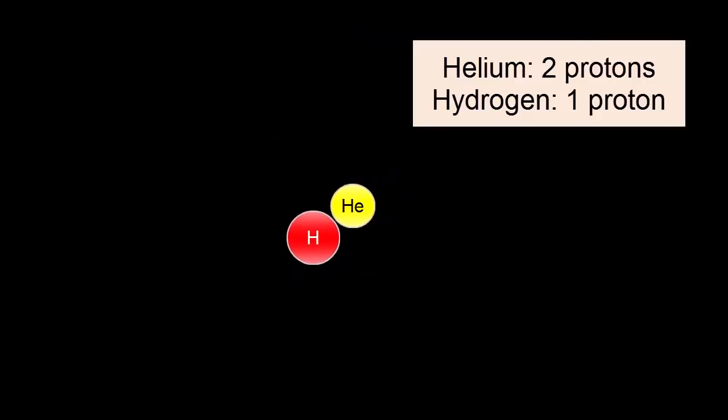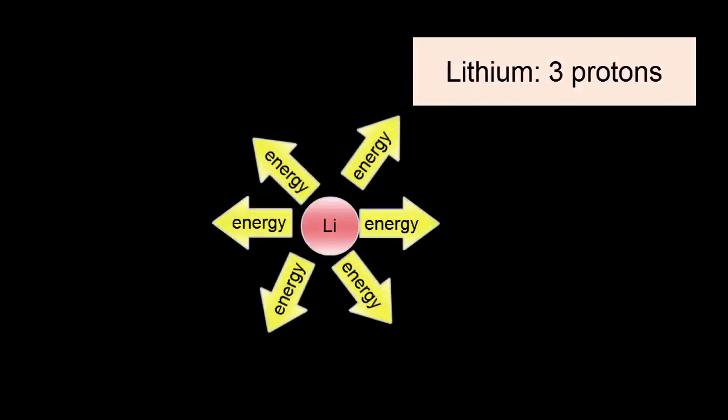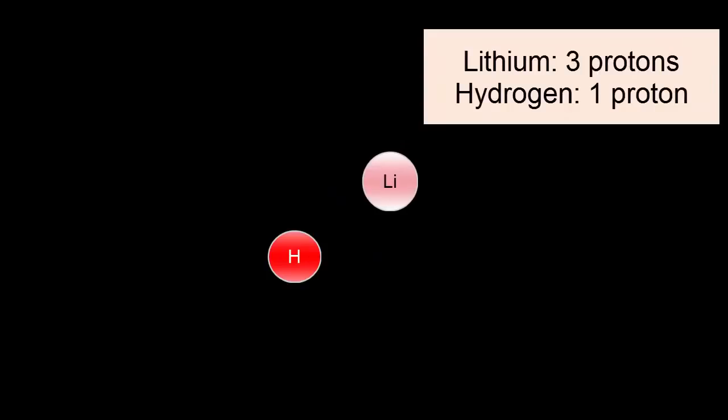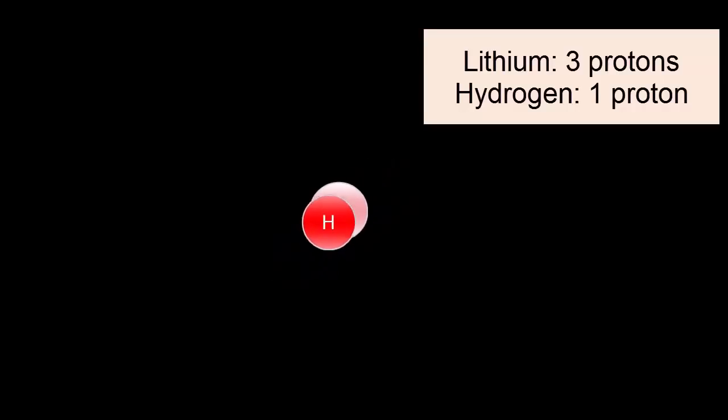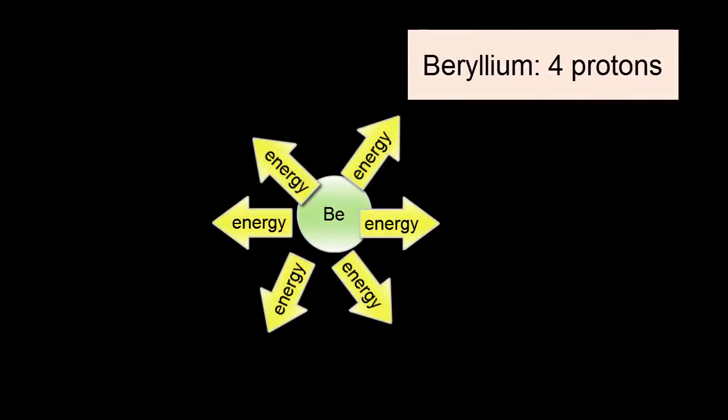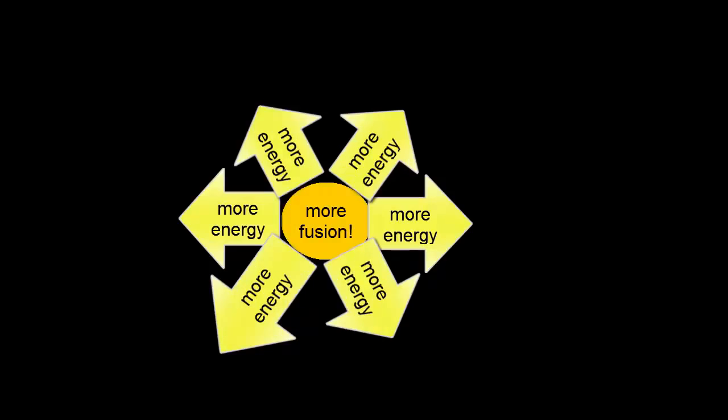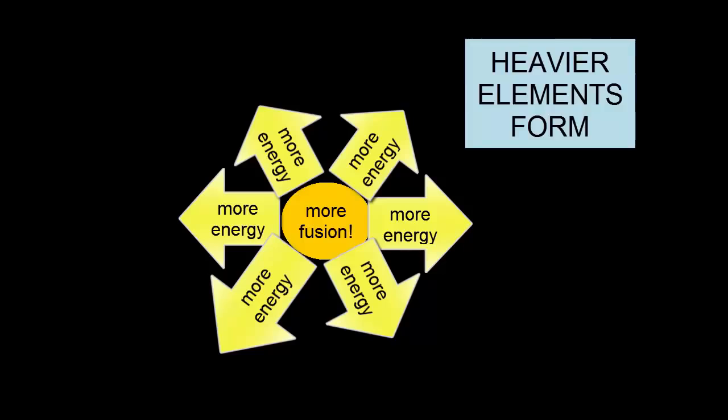Lithium fuses with hydrogen to produce beryllium, four protons in the nucleus. As more fusion occurs, more energy is produced. As more energy is produced, heavier elements are formed.